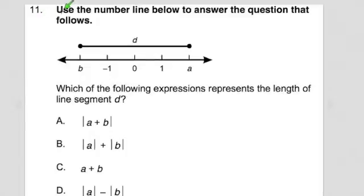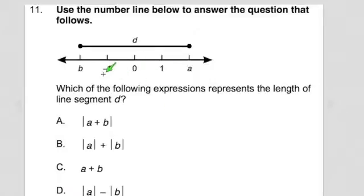Number 11. Use the number line below to answer the question that follows. It gives us this number line — it's got A, it's got B, it's got D, it's got 0, 1, and negative 1. Which of the following expressions represents the length of the line segment D? So we're trying to find the length of D here, and then it gives us these values.